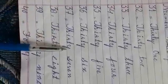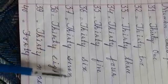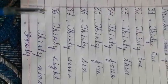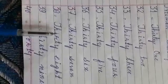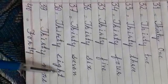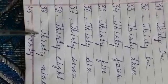Now here is 37: T-H-I-R-T-Y S-E-V-E-N, 37. Now here is number 38, and it is spelled as T-H-I-R-T-Y E-I-G-H-T, 38. Now here is 39: T-H-I-R-T-Y N-I-N-E, 39. Now here is number 40: F-O-R-T-Y, 40.